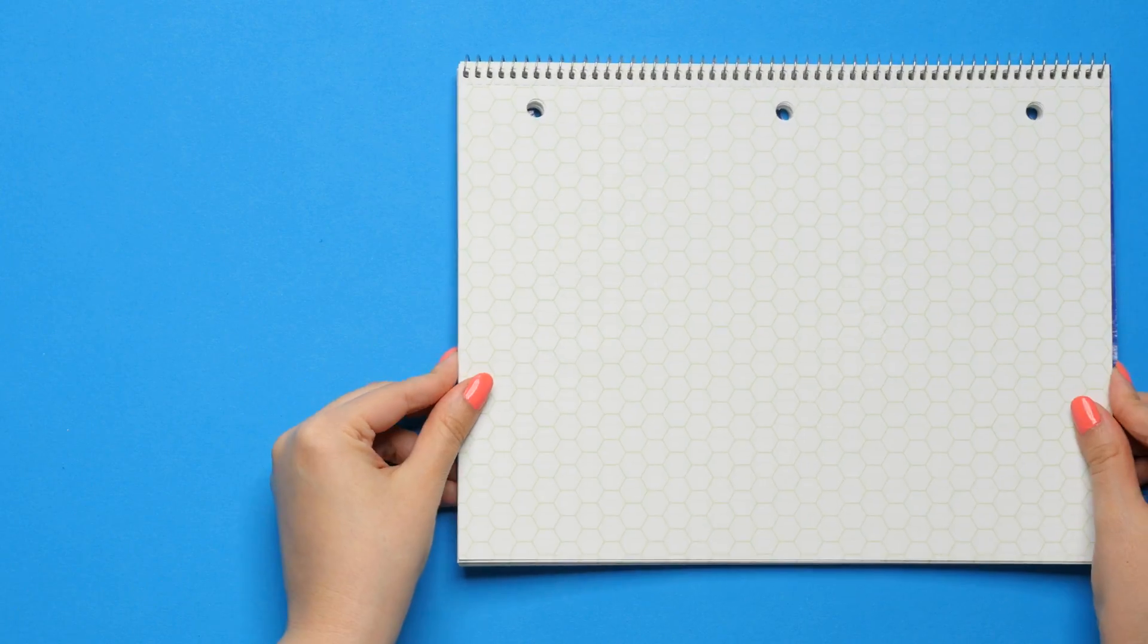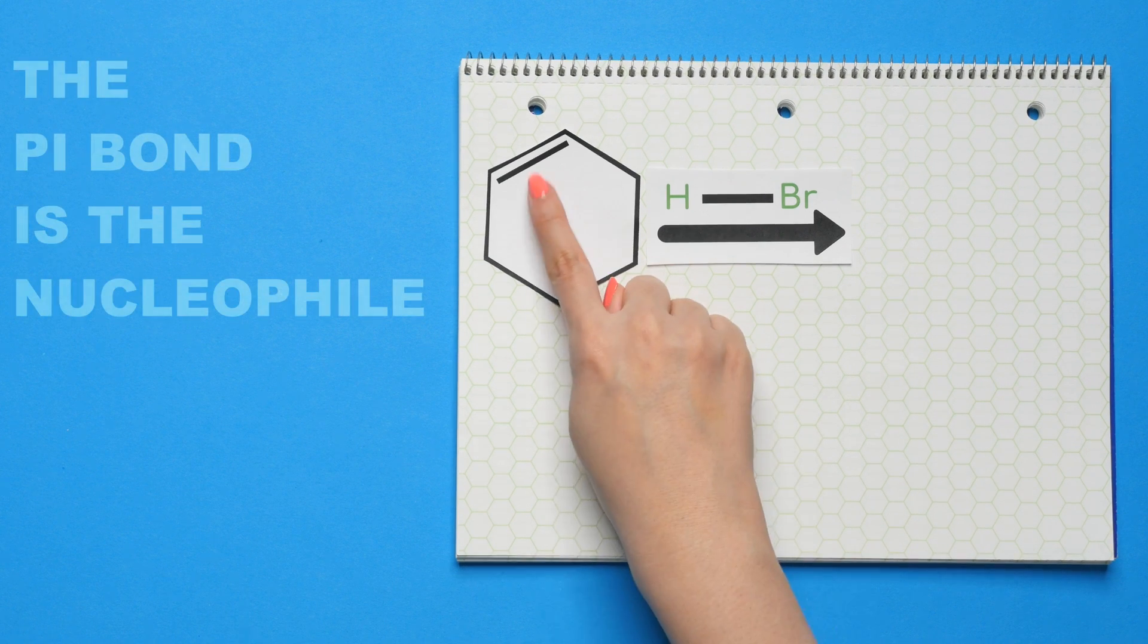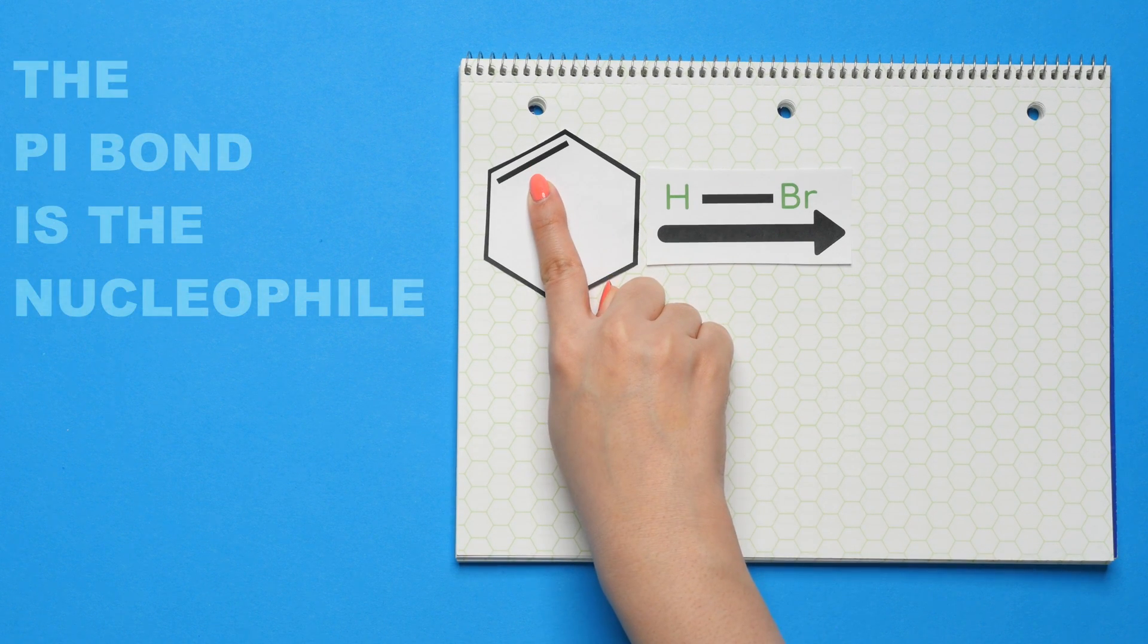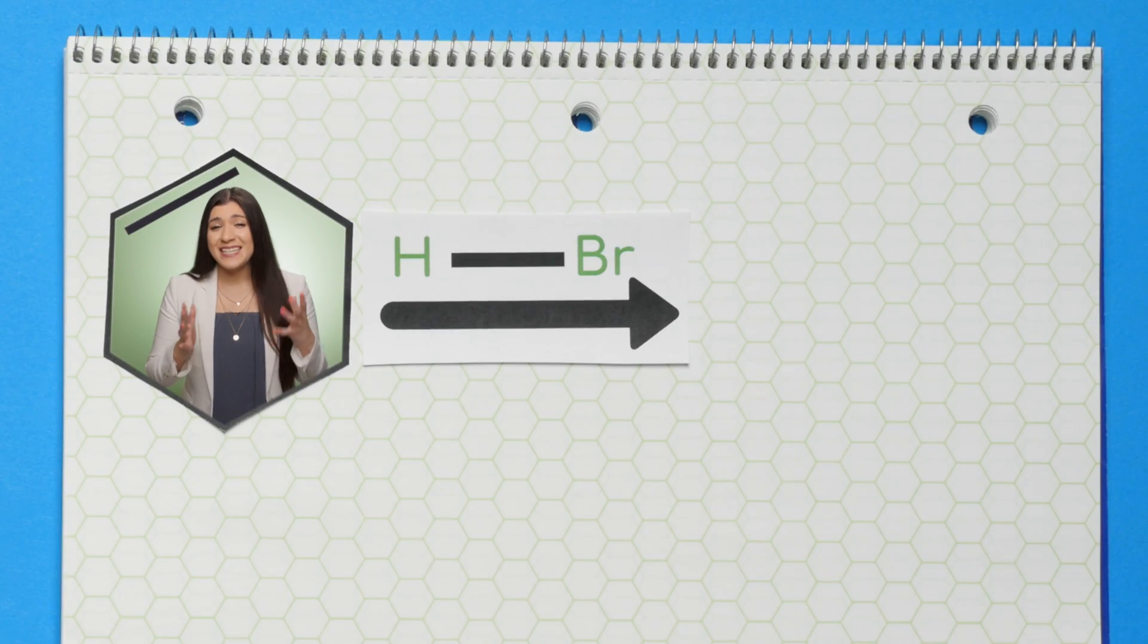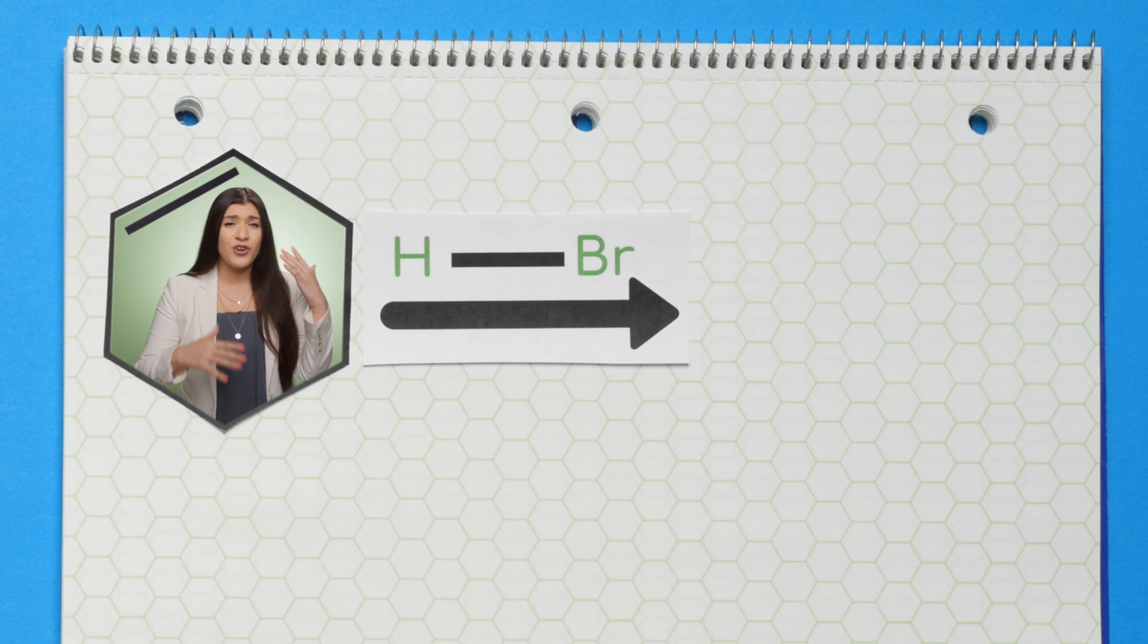Here's a common hydrohalogenation example. This double bond, or pi bond, is our nucleophile, and the hydrogen is our electrophile. Where students make the most mistakes is by not understanding how electrons move and what's happening to each atom.